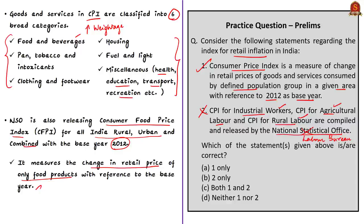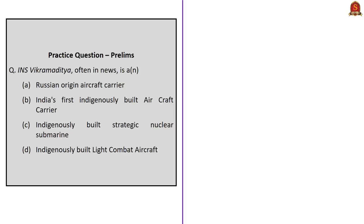Additionally, note that the Index of Industrial Production (IIP) is also released by NSO, whereas the Index of Eight Core Industries is released by the Office of the Economic Advisor in the Ministry of Commerce and Industry. With this information, let's move on to the next news article analysis.